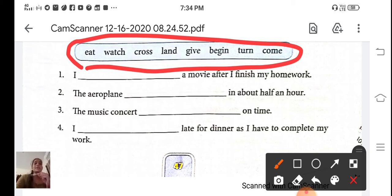The music concert will begin on time. I dash late for dinner as I have to complete my work. So which is the perfect verb students? Yes, it's come. I will come late for dinner as I have to complete my work.